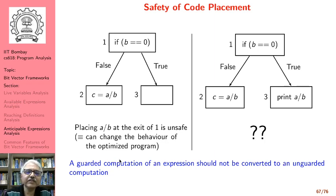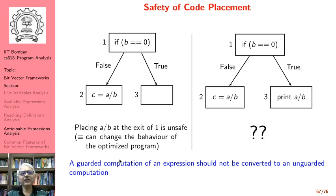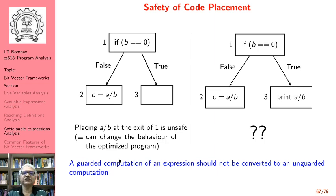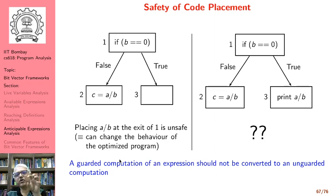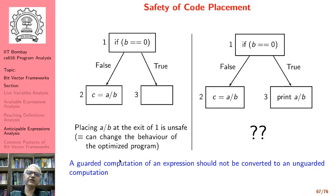The essential idea is that a guarded computation of an expression should not be converted to an unguarded computation. By a guarded computation we mean a conditional computation — one that happens only when a condition, also called a guard, is true. If we do not perform anticipable expressions analysis we might end up converting a guarded computation into an unguarded computation. So we should only place an expression at program point p if we know that along every path from that program point onwards, that expression evaluation happens.